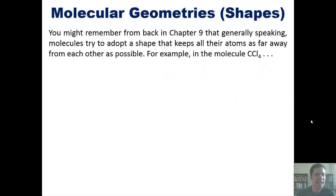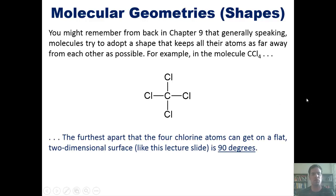So back in Chapter 9, to which I'll link right here, you might remember that, generally speaking, molecules try to adopt a shape that keeps all of their atoms around them as far away from each other as possible. For example, in the molecule CCl4, or carbon tetrachloride shown here, the furthest apart that the four chlorine atoms could get on a flat two-dimensional surface, like this lecture slide, is 90 degrees.